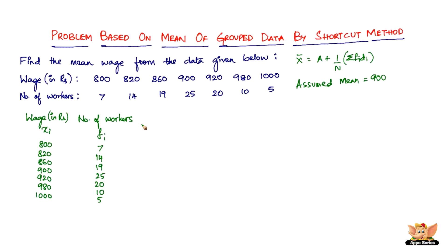And then we've got the deviation here. The deviation is di which equals xi minus A, which is nothing but xi minus 900. How much does the original value vary from the assumed mean? Let me draw a table here so that it's easy to read.